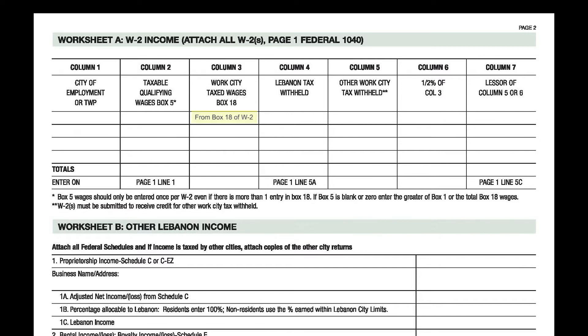Column three is for the amount of wages that your work city taxed. Please use the amounts from box 18 on the W-2. If you have more than one entry in box 18, please enter them on separate lines of Worksheet A with their corresponding cities in column one. If this is the case, do not enter your box 5 wages twice — only once.